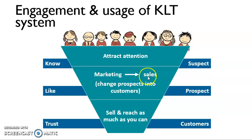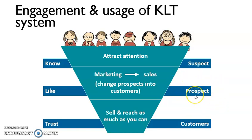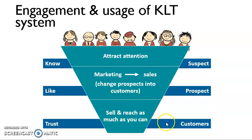We do some promotion so that the customer will want to buy our product. We change the suspect to the prospect — customers who have interest, who like to buy our product. And after that, we make them trust us. In other words, we make them want to try our product. They trust our product and apply it, and so they become our customers who buy our product. This is what we call the KLT system.